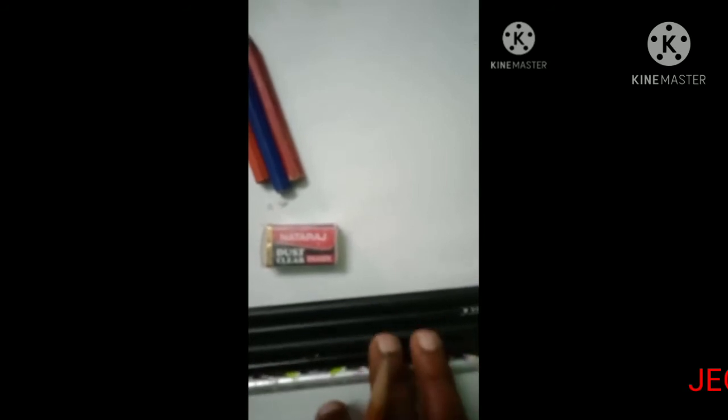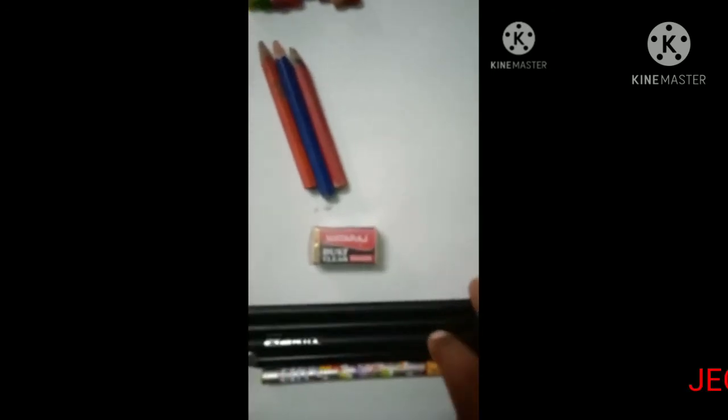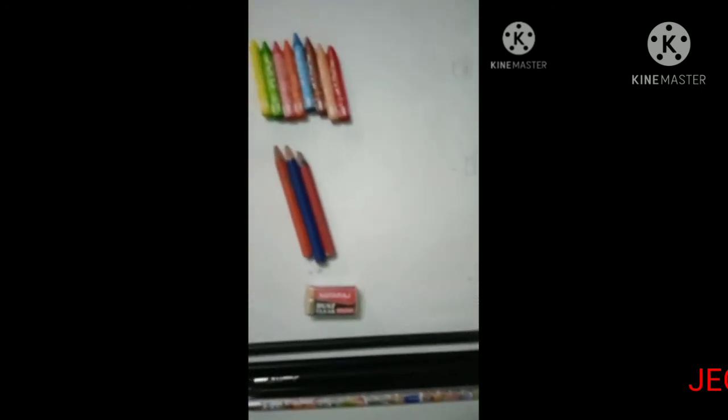Now count the number of pencils: 1, 2, 3, 4, 5. There are 5 pencils here. First separate the things, then count and write. Sorting means to group things by separating them from a given collection of objects — this is called sorting.